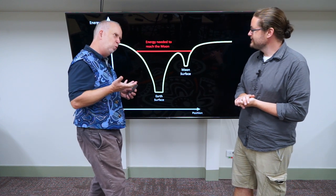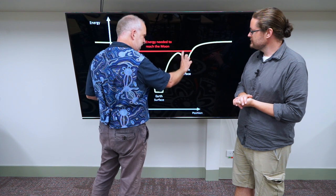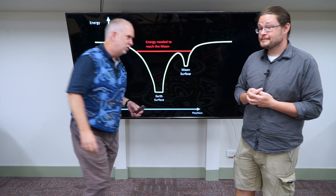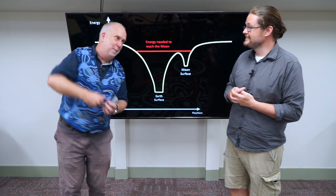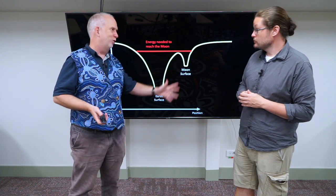There is also a problem of getting rid of the energy, because you have to get over, then you have to somehow get rid of energy. Because if you just fell, by the time you reach the Moon's surface, you'd be going pretty fast. You'd have this much kinetic energy, which is not a controlled landing. It's like, wham! It's what we call a hard landing.